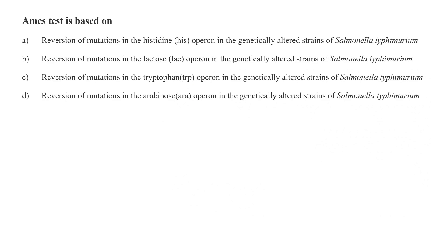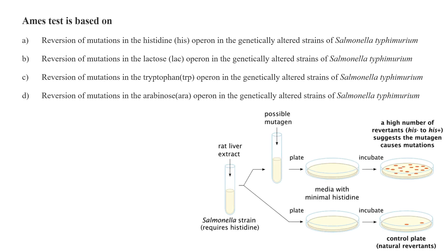Ames test is based on reversion of mutation in the histidine operon in genetically altered strain of Salmonella typhimurium, reversion of mutation in lac operon, reversion of mutation in tryptophan operon, or reversion of mutation in arabinose operon? Look, Ames test is based on the reverse mutation or back mutation of mutant Salmonella typhimurium. Salmonella typhimurium lacks the capacity to synthesize histidine. That means there is some problem with histidine. Now if Salmonella typhimurium comes in contact with mutagen, the mutagen may cause reverse mutation and then the histidine synthesizing capacity, that means his operon, will be restored. So here option A should be the correct answer.